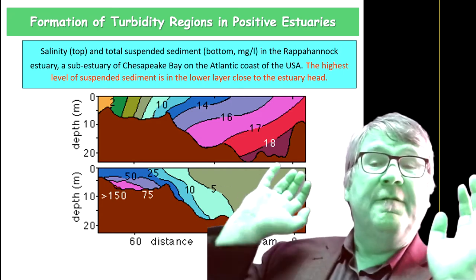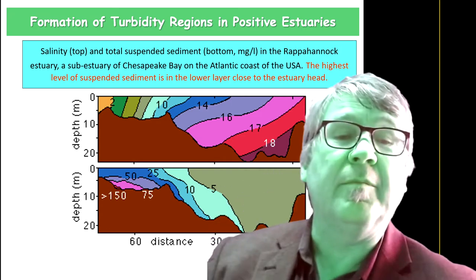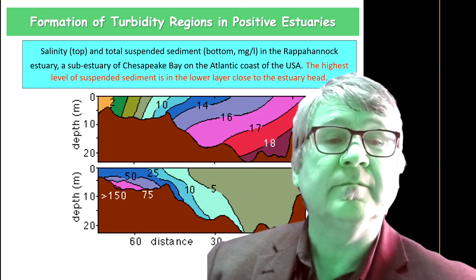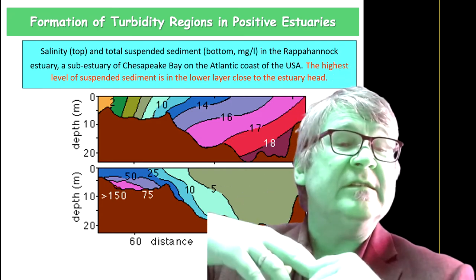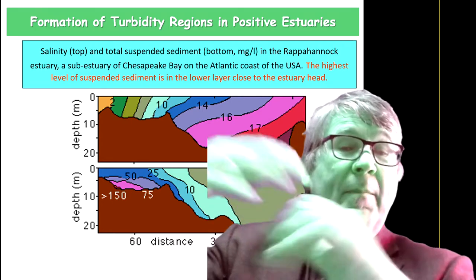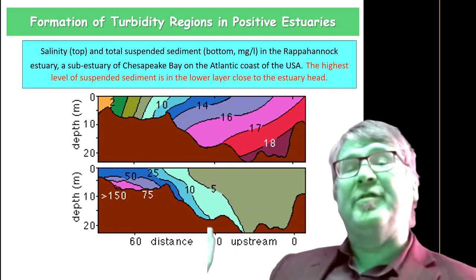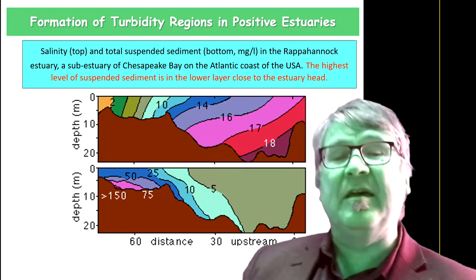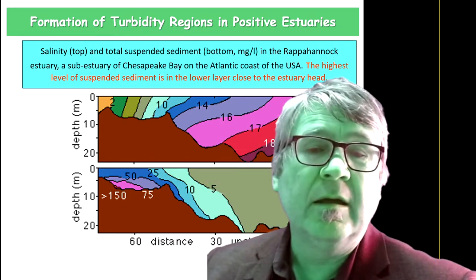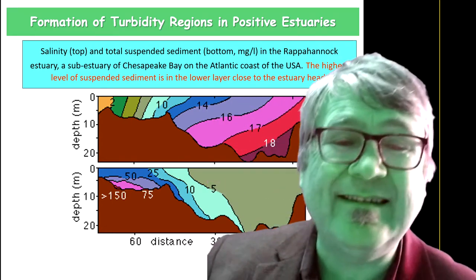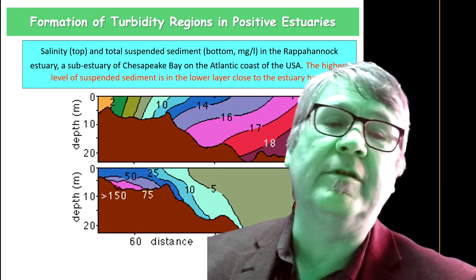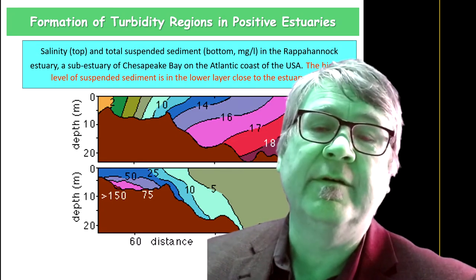Here is the first example. This is Rappahannock Estuary, a sub-estuary of Chesapeake Bay on the Atlantic coast of the US.